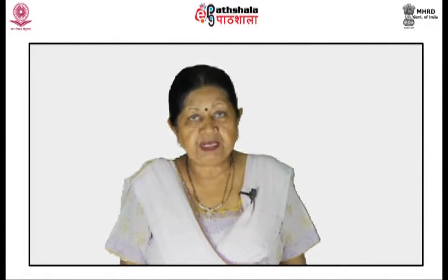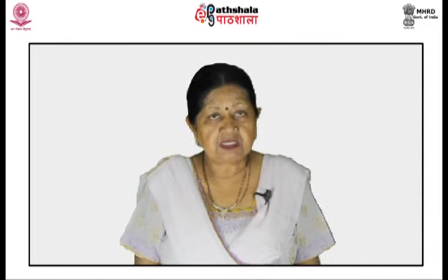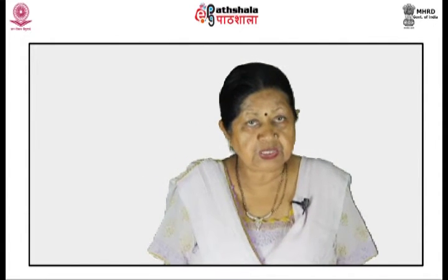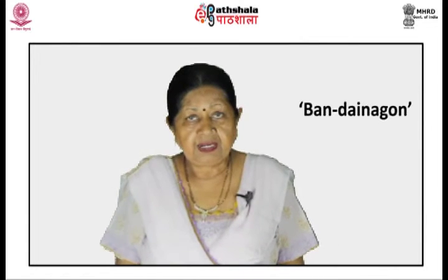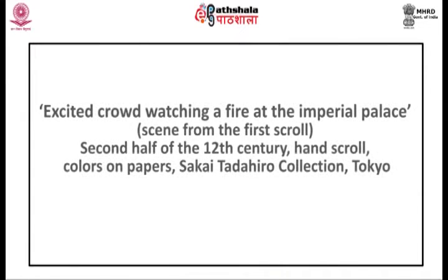A great fire in the imperial palace in 1176 may have recalled the events of the 9th century, so that the illustration of these scrolls was linked up with the curious destiny of Ban Dainagon. The story of Ban Dainagon E-Kotoba, attributed to Tokiwa Mitsunaga, depicts an excited crowd watching a fire at the imperial palace, seen from the first scroll, second half of the 12th century. It is a hand scroll, colors on paper, at present in the Sakai Tadahiro Collection, Tokyo.